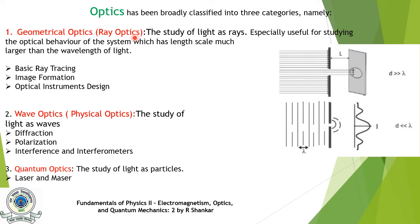Geometrical Optics or Ray Optics is the study of light as rays. It is especially useful for studying the optical behavior of systems which have a length scale much larger than the wavelength of light. When we shine light on a lens or mirror, the size of the lens or mirror is very large compared to the wavelength of light, so we use Geometrical Optics concepts.